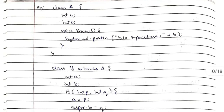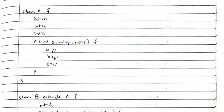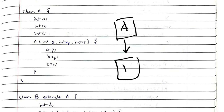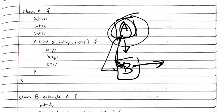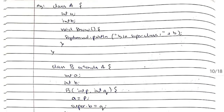The 'super' keyword has two purposes. First, it accesses data variables of the superclass. For example, if class A has 'int a' and 'int b', and class B also has 'int a' and 'int b', there is ambiguity when B tries to access them. To access the superclass variables, use 'super.a' or 'super.b'. Second, when class B extends class A and we create an object of B, all variables of both A and B are included. The constructor of class A must be called first using the 'super' keyword to initialize those variables.